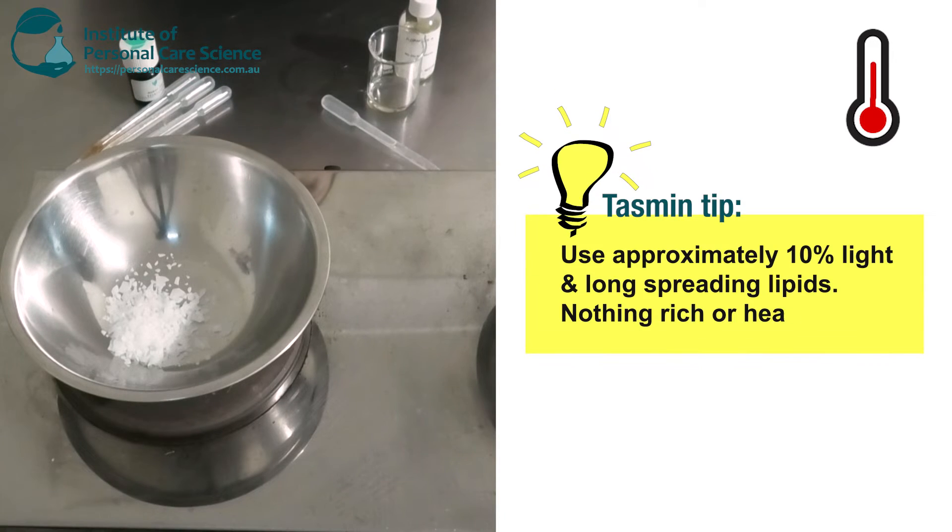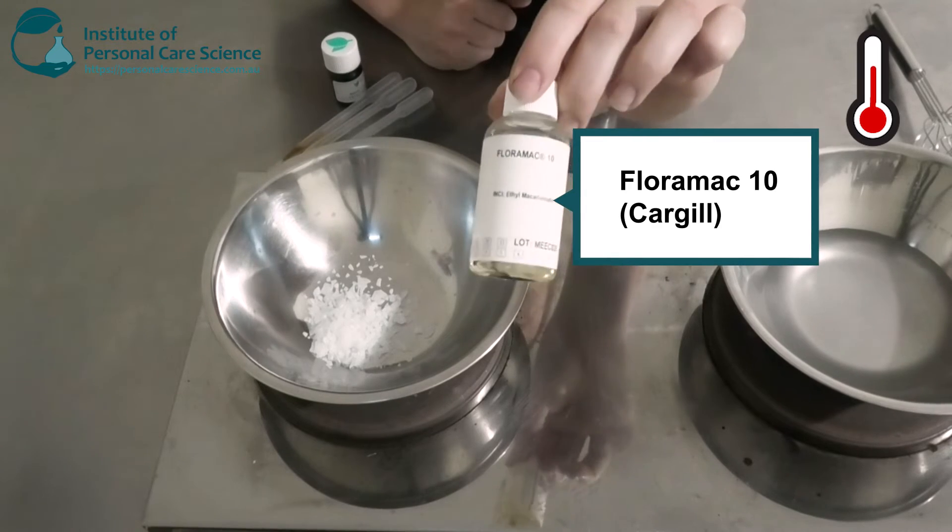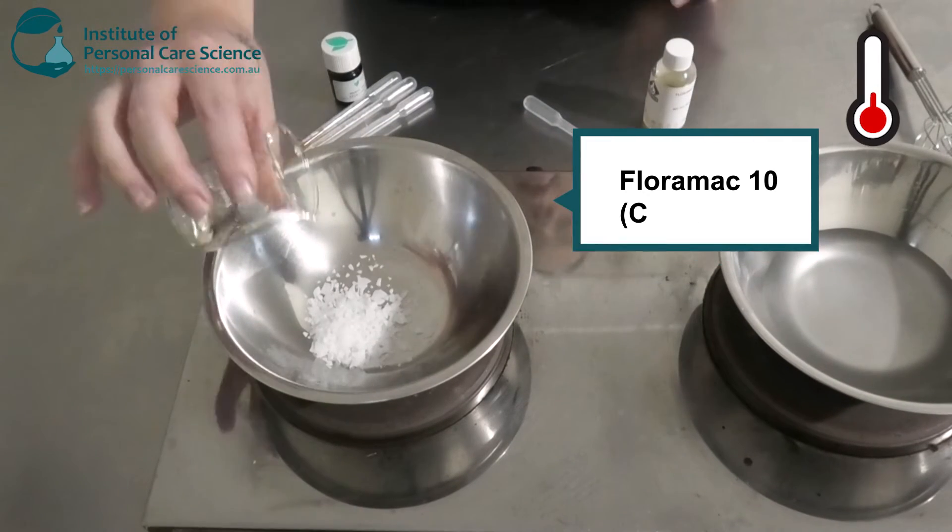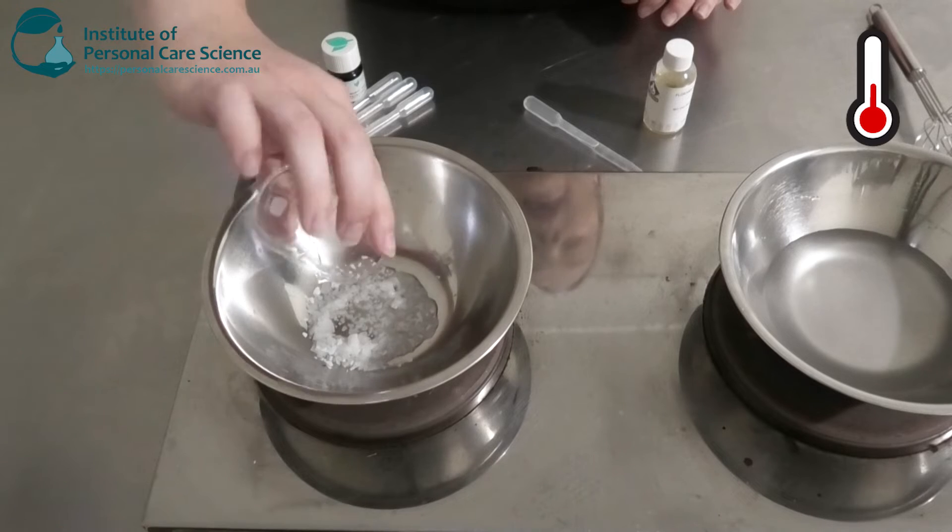So you do want to use around nine or ten percent of your lipid phase, and you want to use some light-feeling lipids. So here I've got some FloraMAC 10. So this is a really nice light-feeling ester.